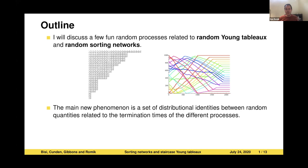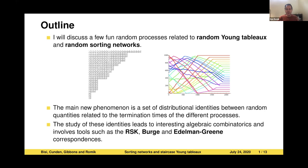This talk has a probabilistic flavor. The main thing I'll be describing are a few interesting random processes that show up in the context of random Young Tableau and random sorting networks. Here are some pictures of these things in case we haven't seen them before, but I'll go into more detail about what they mean. There's a main kind of new phenomena that I'll be talking about, which is a set of probabilistic identities. These are distributional identities where one random variable has the same distribution as another random variable, or in some cases, random vectors.